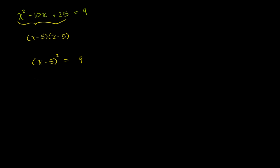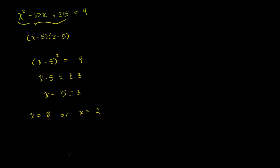Now we can take the square root of both sides. So we say x minus 5 is equal to plus or minus 3. Add 5 to both sides, and you get x is equal to 5 plus or minus 3. So x could be 8, or x could be equal to 5 minus 3, which is 2.